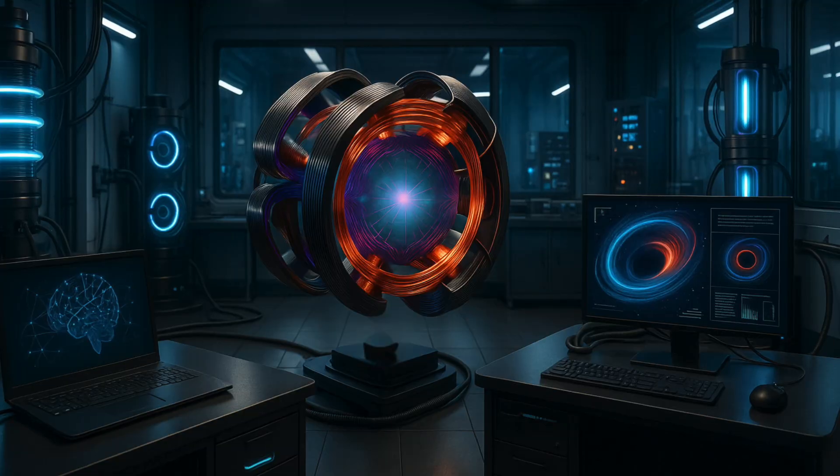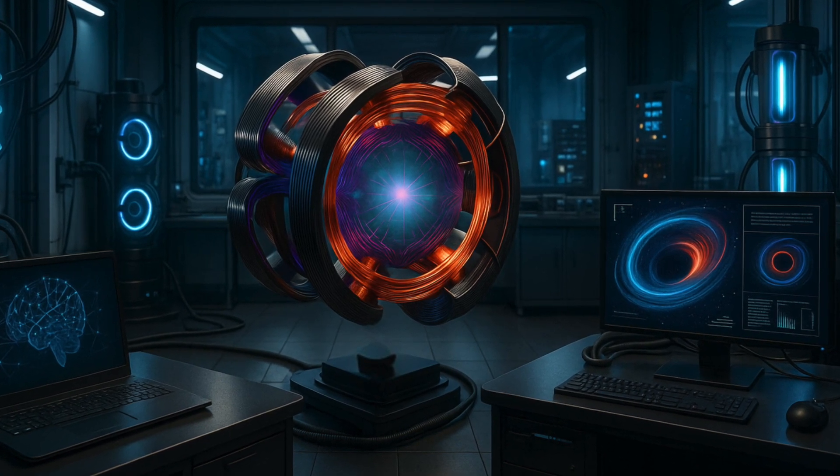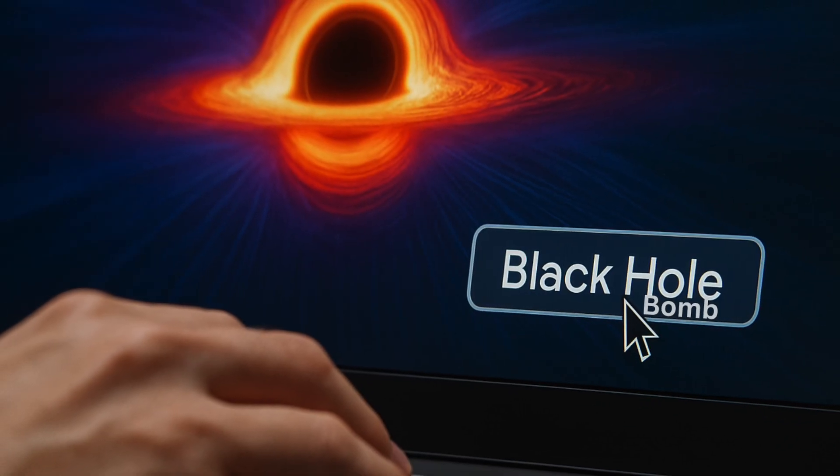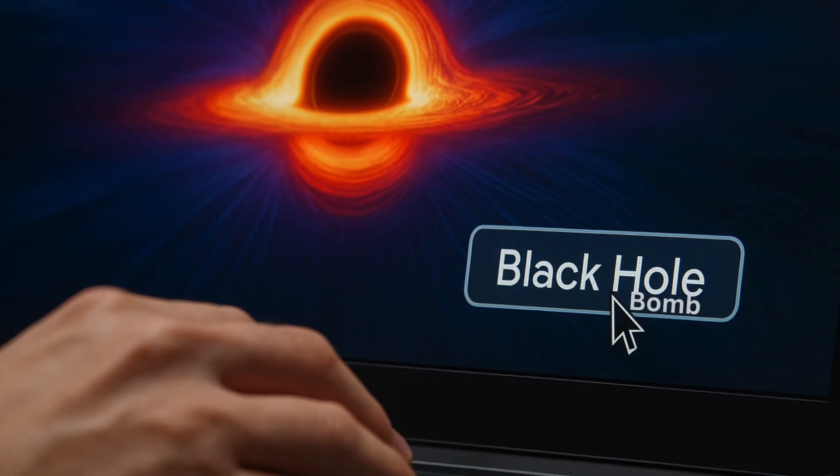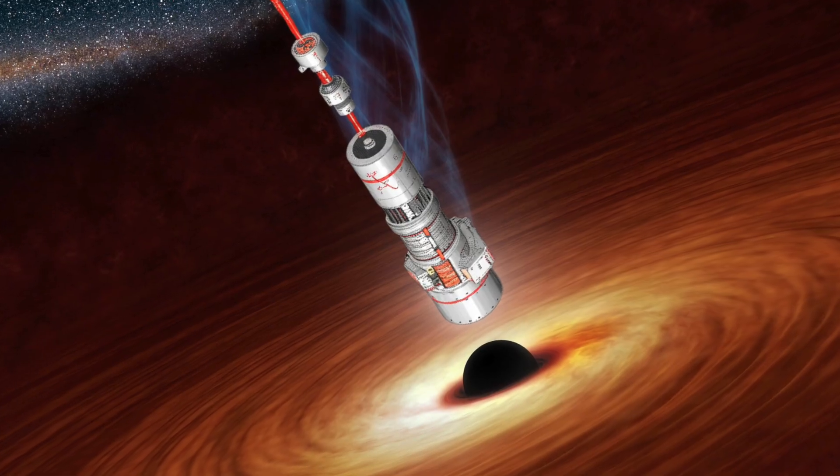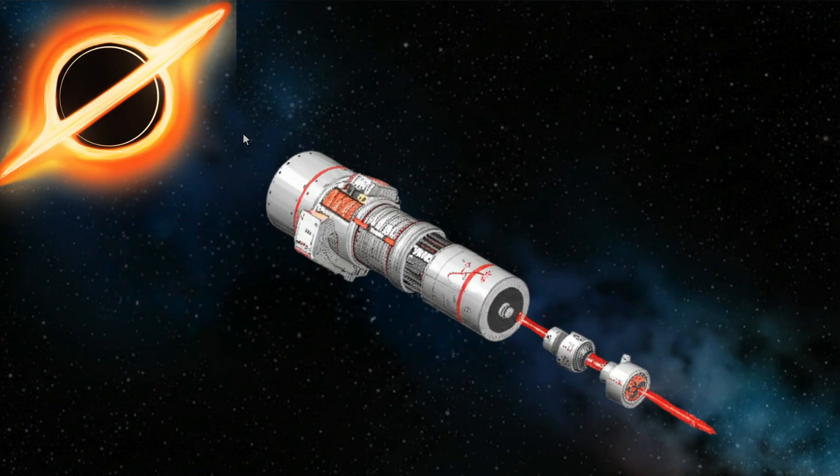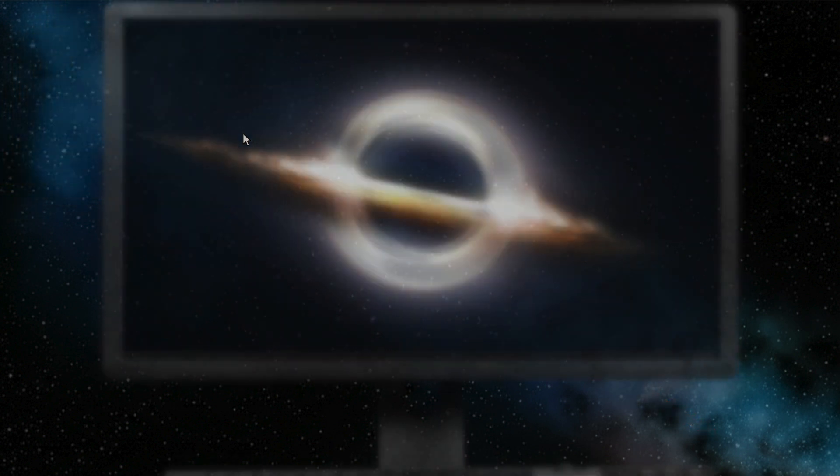Of course, the scientists weren't trying to build a bomb. They were trying to understand the nature of black holes. But if you know anything about humanity's history with weapons, you know it probably won't stop there. Now, here's what you need to know. You don't actually need a real black hole to build a black hole bomb, but you do need something that behaves like one. That means you control the energy and the explosion. The idea sounds simple, but let's begin at the beginning, with a paper from 1972.